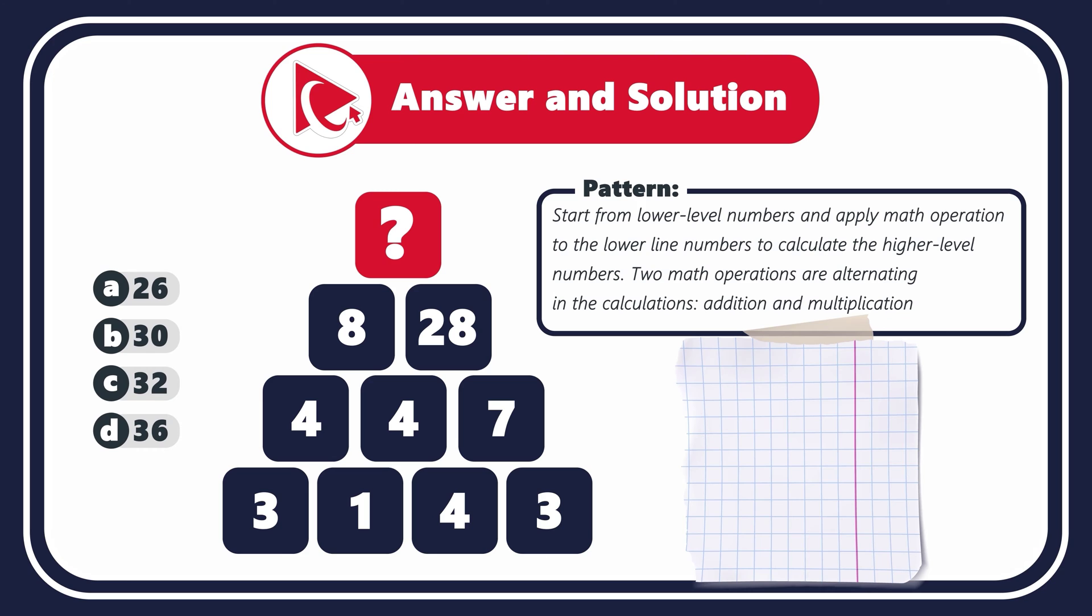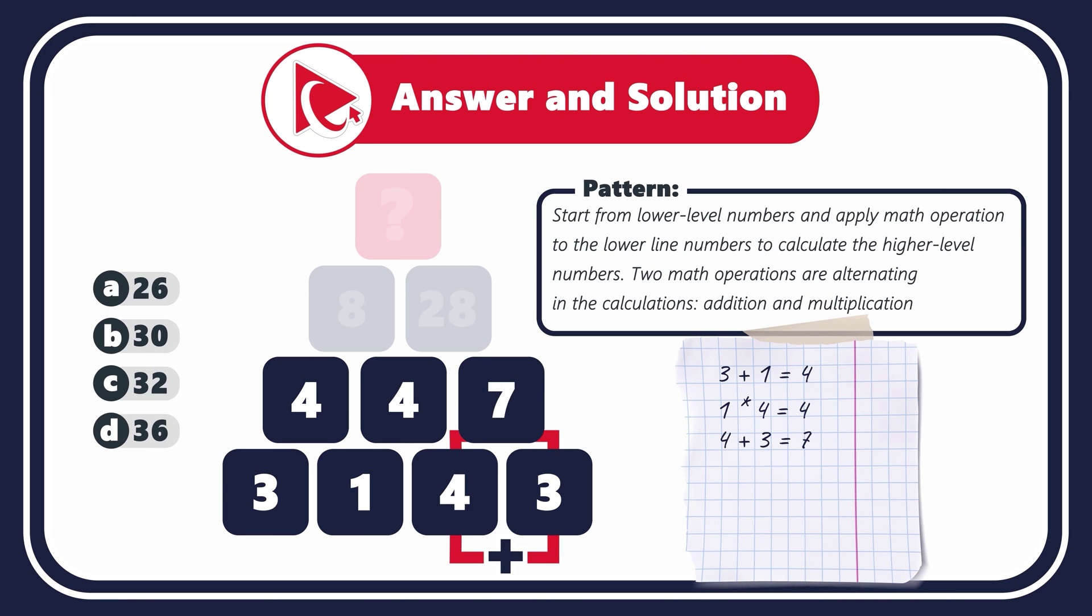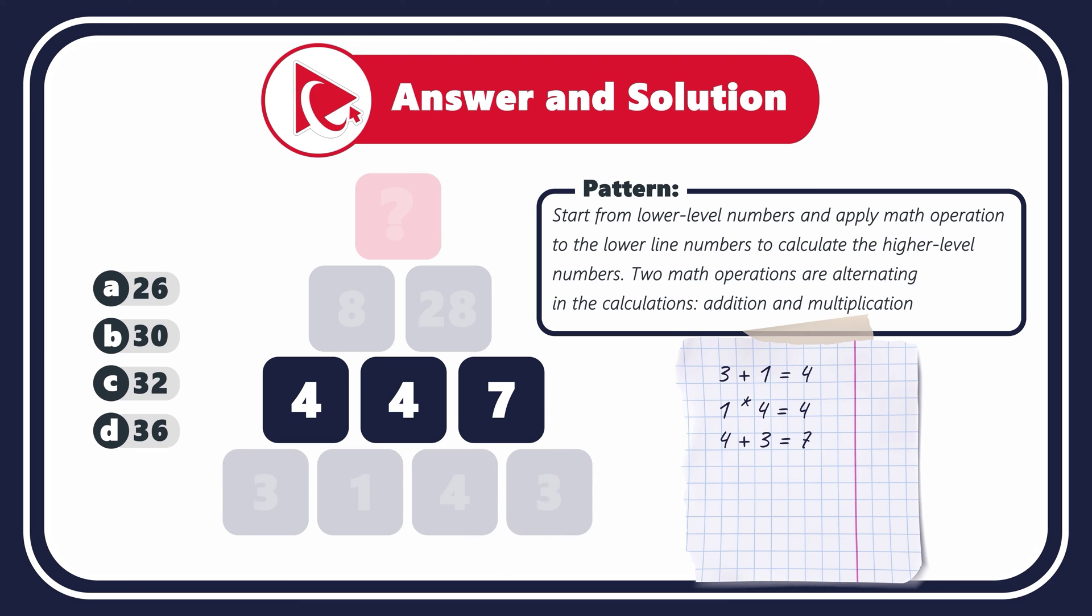Let's look at the example so you get better understanding. Let's look at the numbers in the bottom left corner. 3 plus 1 equals 4. But 1 multiplied by 4 equals 4. Remember I told you that addition and multiplication are alternating. So the next one would be addition again. 4 plus 3 equals 7. Let's go to row 2. 4 plus 4 equals 8. But 4 multiplied by 7 equals 28.